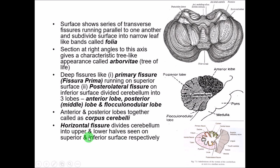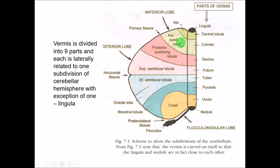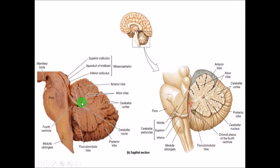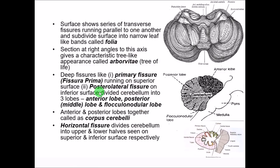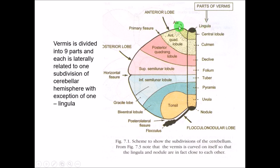To summarize: the superior surface is separated from the inferior surface by the horizontal fissure. The anterior lobe is separated from the posterior lobe by the primary fissure. The posterior lobe is separated from the flocculonodular lobe by the posterolateral fissure. This is the vermis and these are the cerebellar hemispheres.